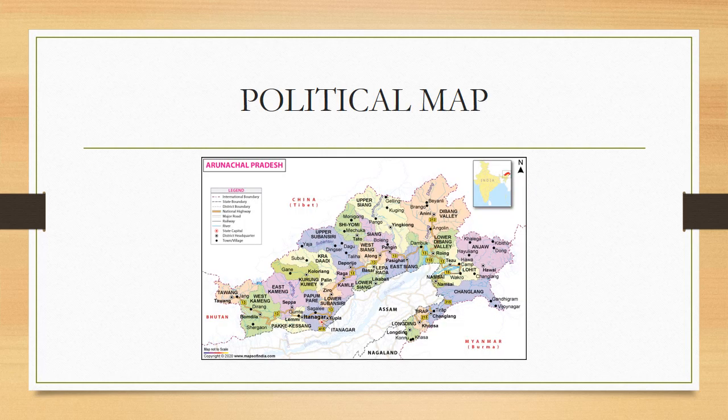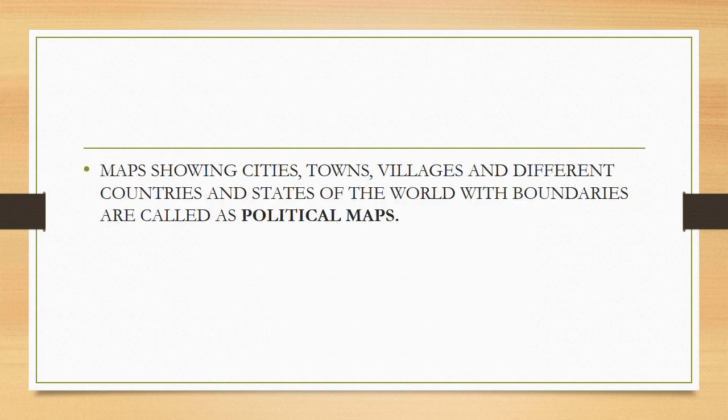The next type of map that we are going to study here is the political map. The last map that you have seen and this map is a bit different. Maps showing cities, towns, villages, and different countries and states of the world with boundaries are called political maps.